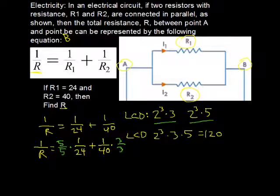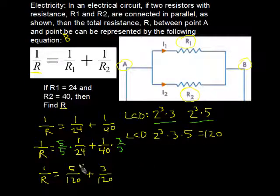And after we do that, we'll end up with 5 over 120 plus 3 over 120. And that gets us 8 over 120. So essentially what we have is this. We have 1 over R equals 8 over 120.